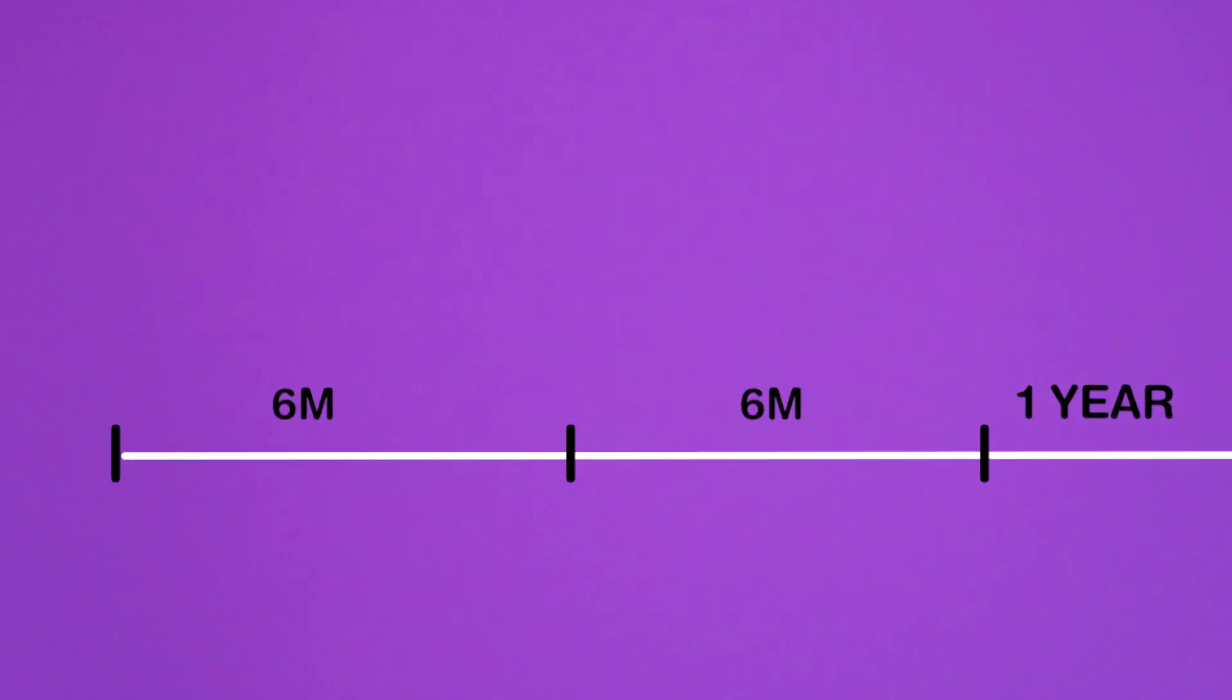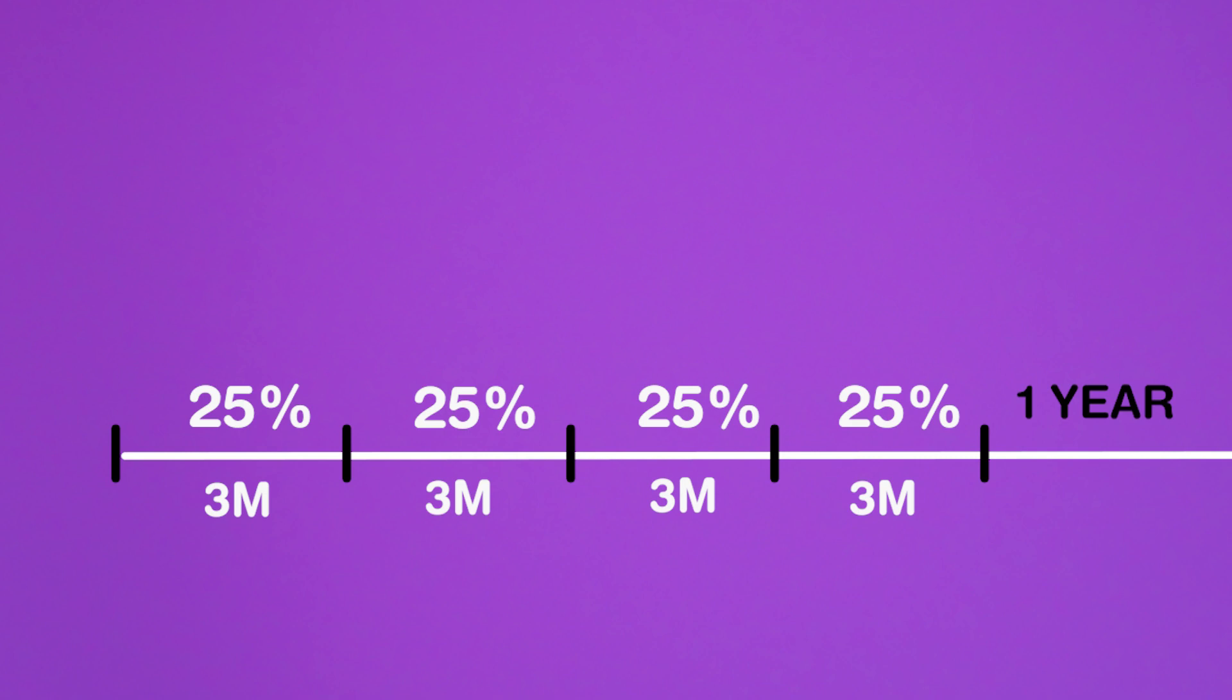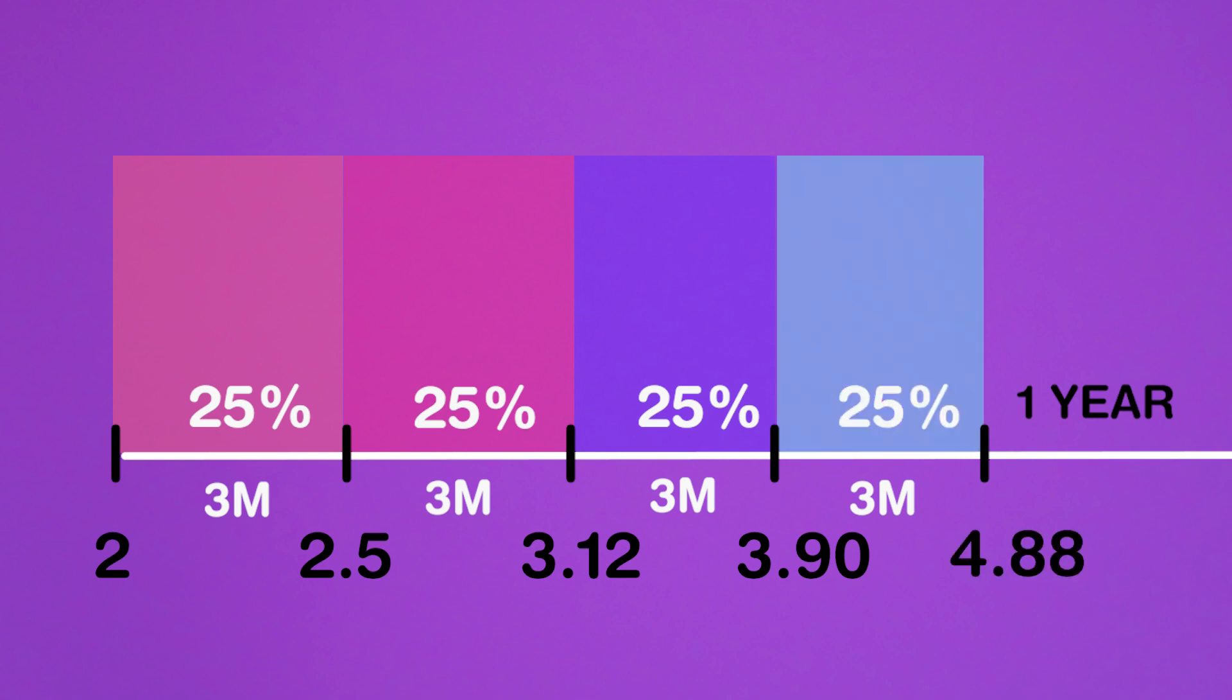What if the year was divided into four equal parts? Every three months, the amount increases by 25%. This will give you $2.5 after the first quarter, $3.12 after the second quarter, $3.90 after the third quarter, and $4.88 at the end of the last period.